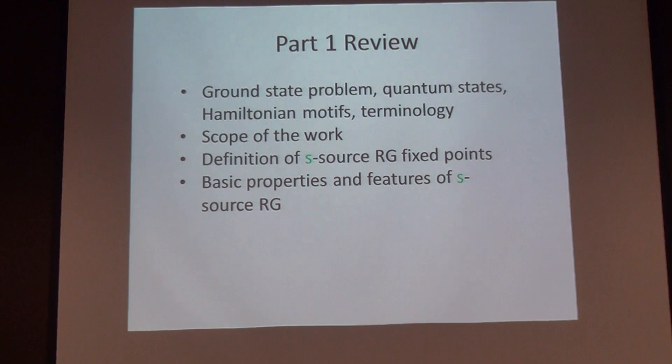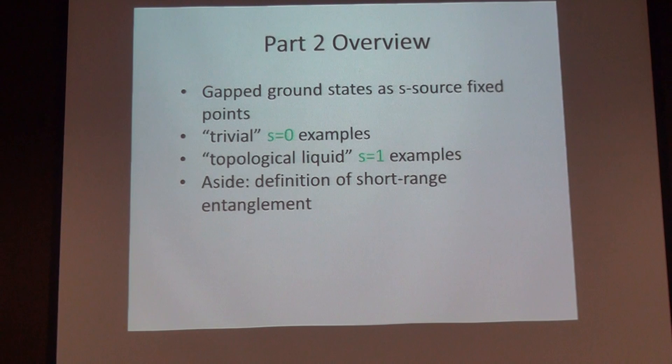I just talked about the ground state problem and defined the s-source RG. Now I'm going to try to convince you that most ground states with a gap that you've thought about are s-source fixed points with s equal to 0 or 1. First I'll show you the trivial case where s is equal to 0, then talk about the non-trivial case where s equals 1, and then at the end I'll probably get to this after lunch, but I'm going to talk a little about the definition of short-range entanglement from this perspective.